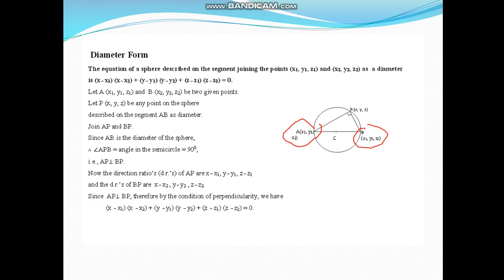So since AB is the diameter, angle APB will be 90 degrees. By the theorem, you know very well: angle in a semicircle is always a right angle. So AP is perpendicular to BP. Now direction ratios of AP: just see coordinates of A and P. Direction ratios of AP will be (x - x₁, y - y₁, z - z₁).